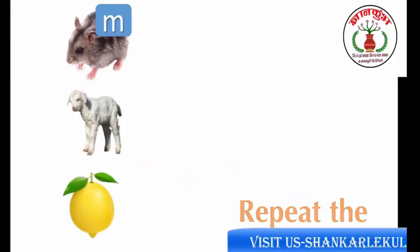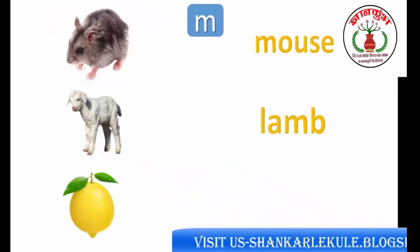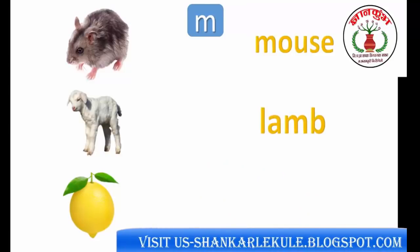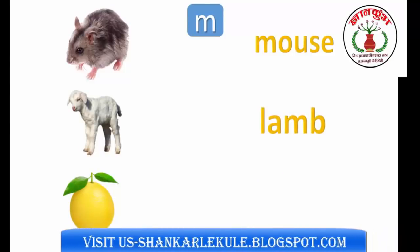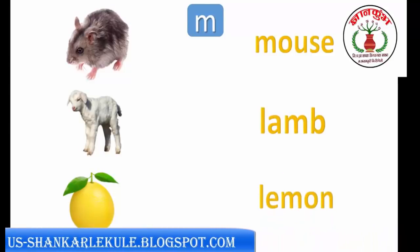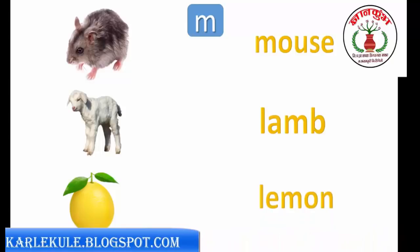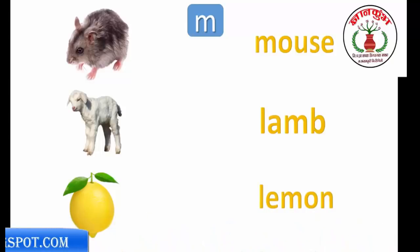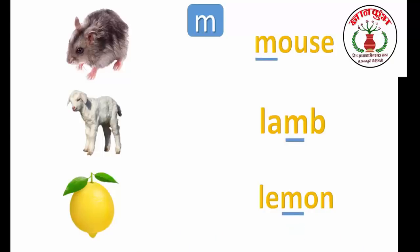Repeat the words: mouse, lamb, lemon. Underline the same letters. Look at the pictures.